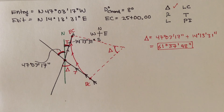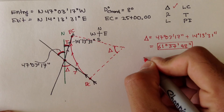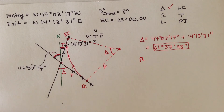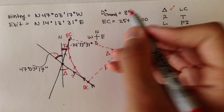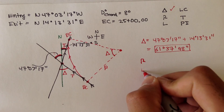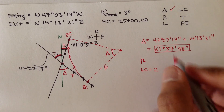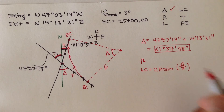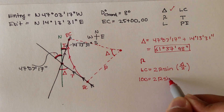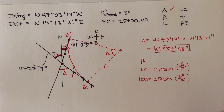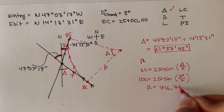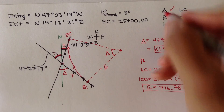Let's do the radius. The radius for this curve — we don't know what it is, but we do know the degree of curvature. Since this is a chord definition, we use the formula: LC equals 2R times sine of delta over 2. Since we're given the degree of curvature, LC has to be 100. So: 100 equals 2R times sine of 8 degrees over 2. Solving for R, our radius is 716.7 feet.